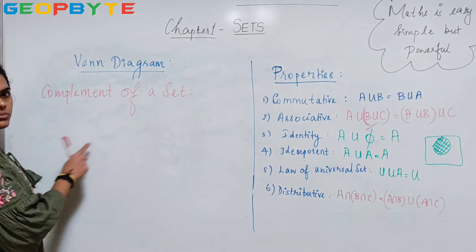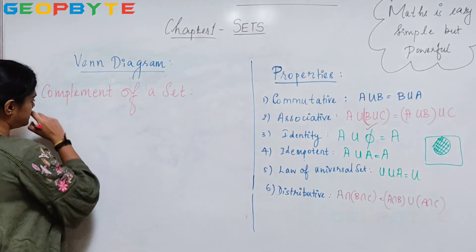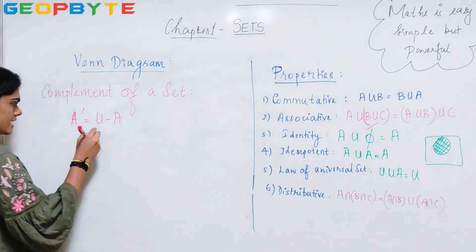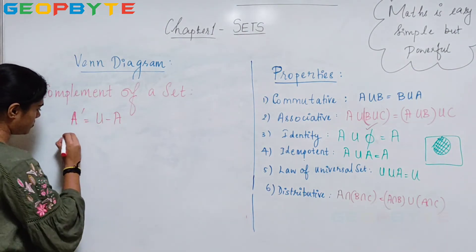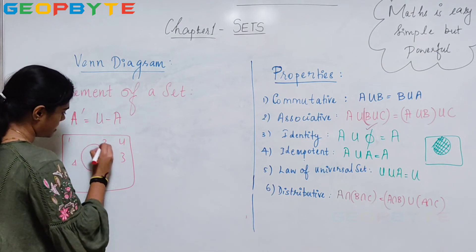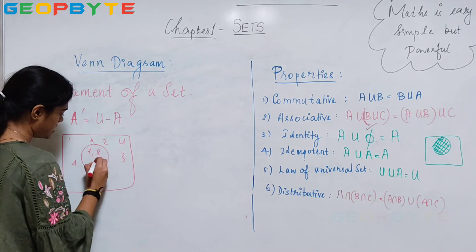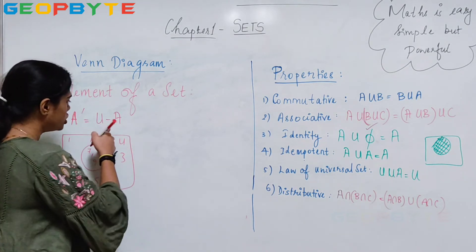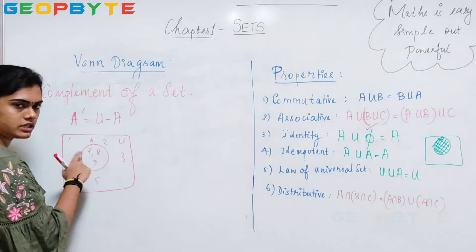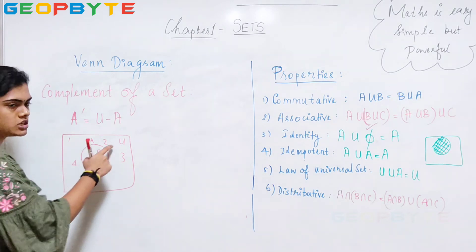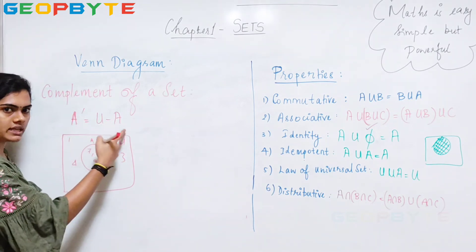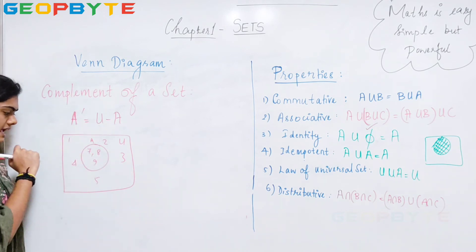Now, another thing in sets is the complement of a set. What is a complement of a set? Complement of a set can be represented as A dash, equal to U minus A. That means it is there in U but not in A. If this is my universal set U containing numbers 1, 2, 3, 4, 5 and my set A is containing 7, 8, 9, then what is A dash? A dash is U minus A — that is elements there in U but not in A. So that is 1, 4, 5, 2 and 3 — elements which are there in U but not in A. So A dash is equal to U minus A, and we call A dash the complement of set A.